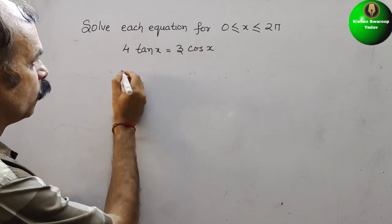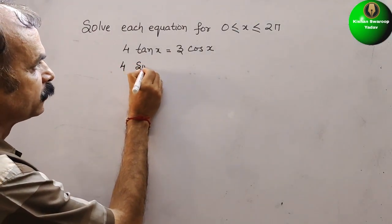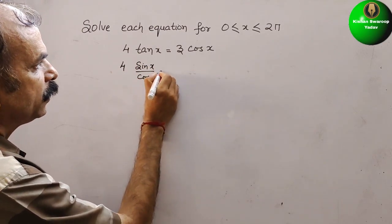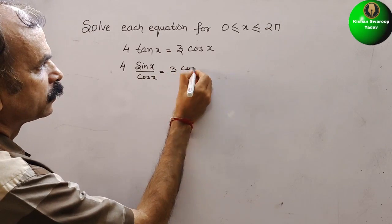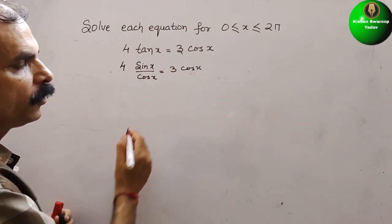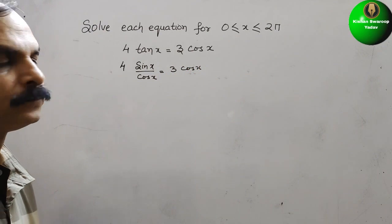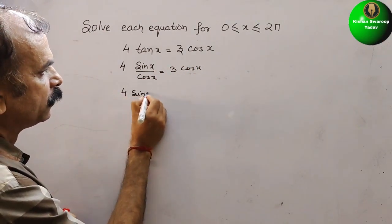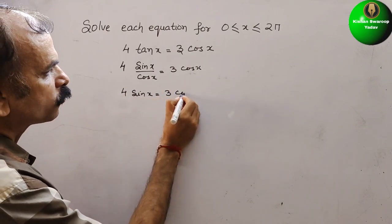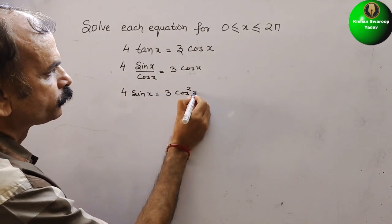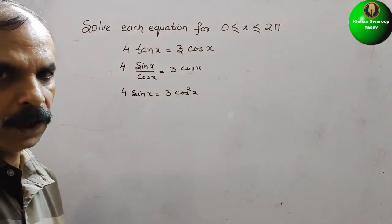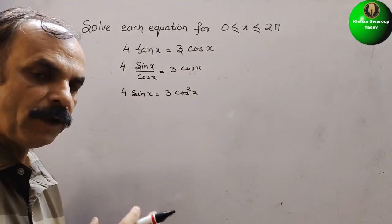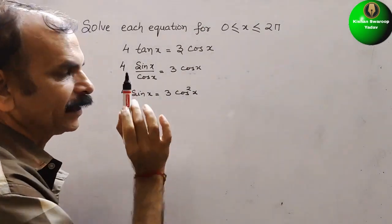So now it will be 4sin(x)/cos(x) = 3cos(x). Now we will go for cross multiplication of this. So here we will get 4sin(x) = 3cos²(x). Now you can see here sin(x) is there and cos²(x) is there.